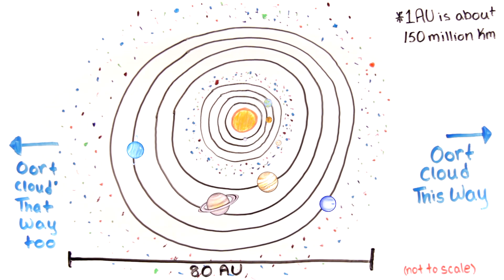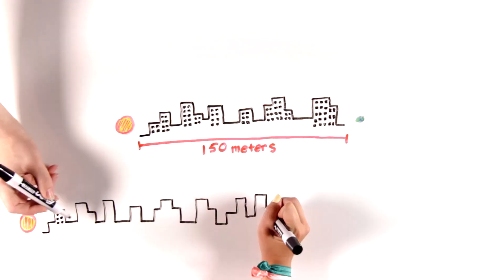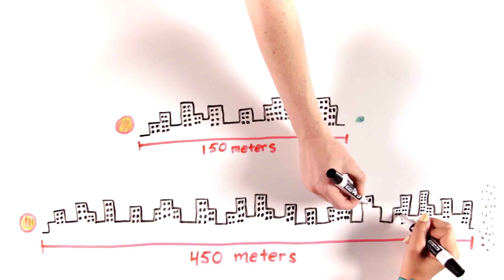But let's look more closely at the scale of our solar system. If we were to make a model of the solar system where everything was reduced by a factor of a billion, the Earth would be about a city block from the Sun and the asteroid belt would be about three city blocks away from the Sun.